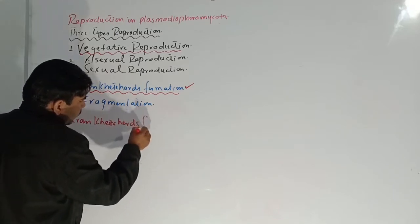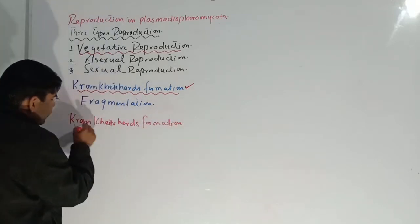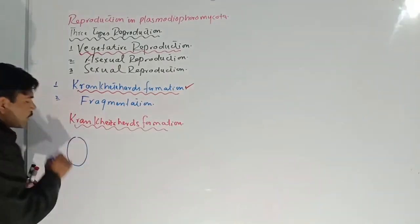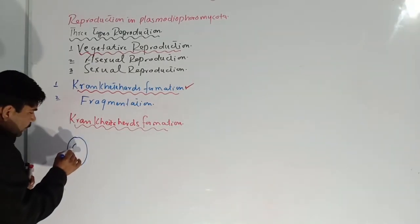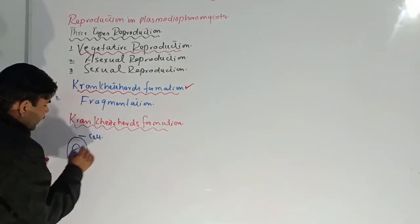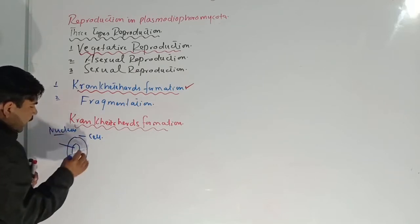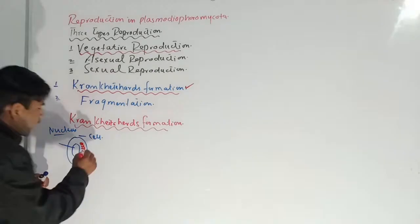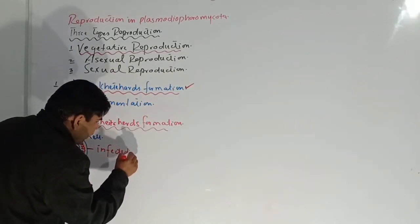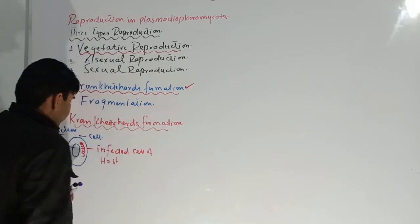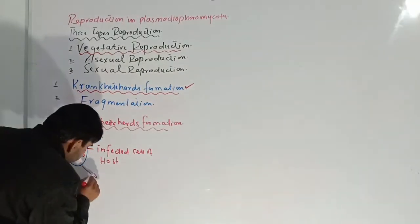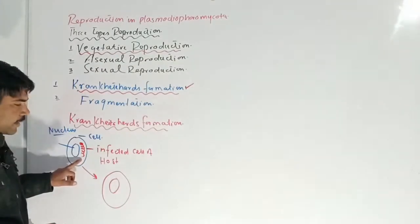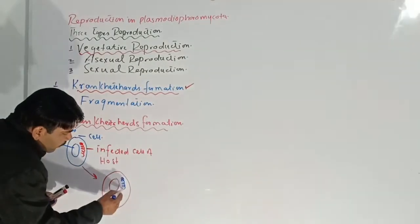In crinkled cell formation, the infected host cell divides. This infected host cell contains a nucleus and a fungus present inside it. Due to the presence of the fungus, we say it is an infected host cell. This cell becomes large — larger than the original cell — with the fungus still present inside it.